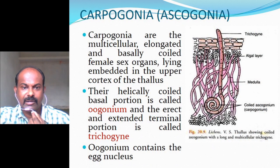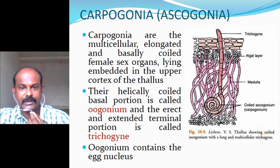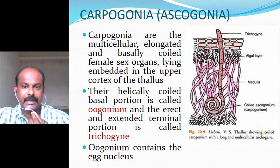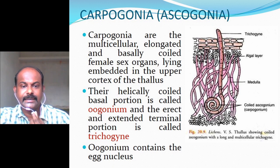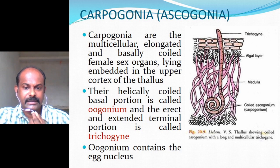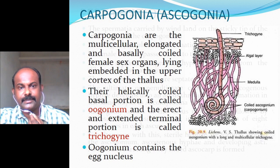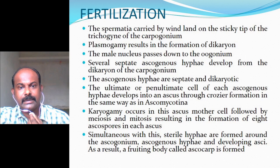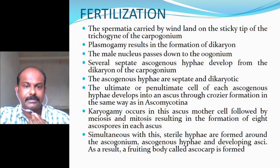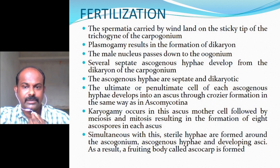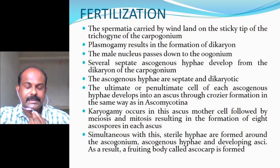Carpogonia or ascogonia are elongated, multicellular, basally coiled female sex organs lying embedded in the upper cortex of the thallus. Their helically coiled basal portion is called the eugonium (ascogonium) and the erect extended terminal portion is called the trichogyne. The basal portion (eugonium) contains the egg nucleus. During fertilization, spermatia carried by wind land on the sticky tip of the trichogyne of the carpogonium; plasmogamy results in formation of a dikaryon, and the male nucleus passes down to the eugonium.